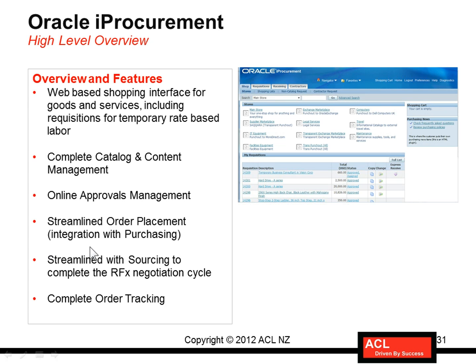Streamlined order placement with integration with purchasing: you can process your requisitions in i-Procurement, and if there is a blanket purchase agreement already in place, i-Procurement automatically picks the blanket purchase agreement based on the criteria given in the requisition if that matches, and then automatically places an order — creating a purchase release based on the BPA. As shown in i-Procurement, those orders can be tracked online.